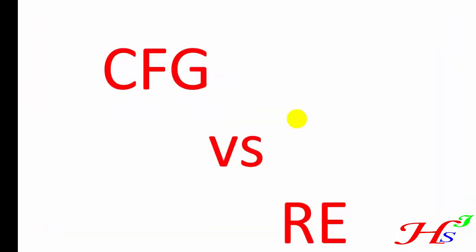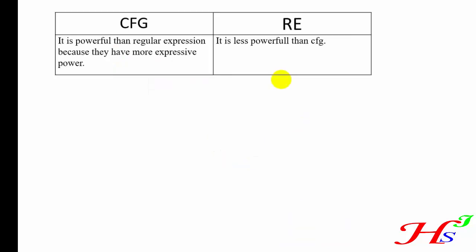Today we are going to learn about the difference between context-free grammar and regular expression, that is CFG vs regular expression. The first difference: CFG is more powerful than regular expression because it has more expressive power. Similarly, regular expression is less powerful than CFG.